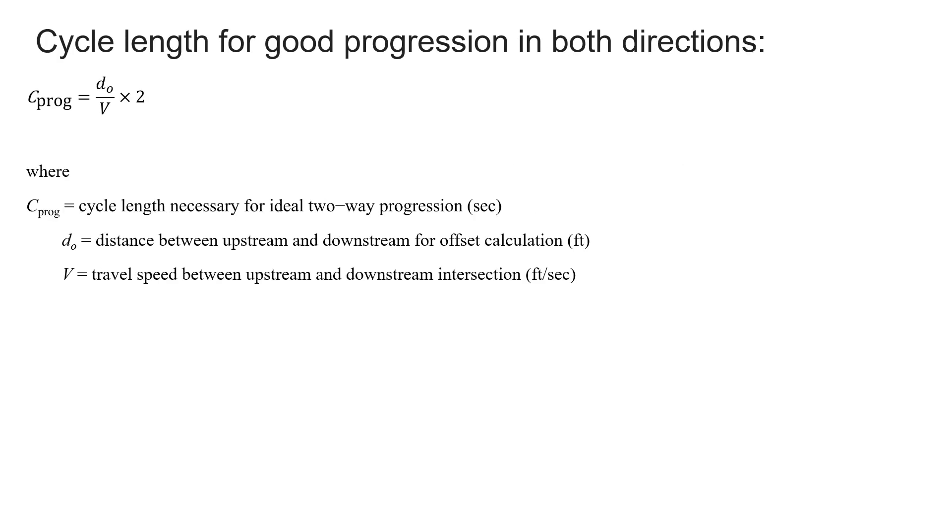Our final equation here is looking at the cycle length for ideal two-way progression. It's a similar type of equation we used before. The theoretical value for that ideal cycle length is two times the travel distance divided by the travel speed. In this example, 800 feet divided by our 45 miles per hour converted to feet per second by multiplying by 1.467 multiplied by two. It's going to give us 24.24 seconds.